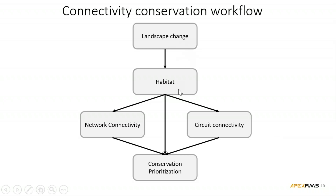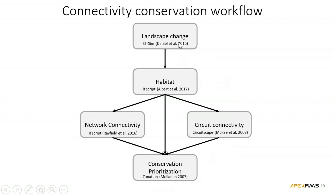Here is a diagram of the sub-models that go into our overall workflow. This prototype doesn't include all relevant sub-models — notably climate change is not yet included — but it gives a sense of how we chain multiple sub-models together. The five sub-models are: a landscape change model, a habitat analysis model, two types of connectivity analyses, and a conservation prioritization model. Each of these models has gone through rigorous peer review and has been published — some are standalone models such as STSim, Circuitscape, and Zonation.